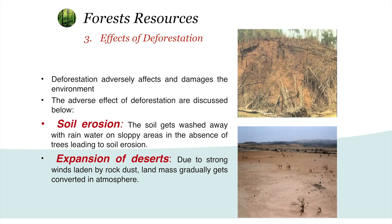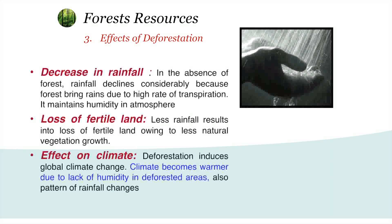Strong winds can carry dust, rock, or sand from the desert to fertile lands and cover them, expanding the deserts. Decrease in rainfall: forests evaporate a lot of moisture and increase rainfall, but if there are no forests, rainfall will decrease. Loss of fertile land: fertile land needs water or rainfall for the growth of vegetation, so without forest it will not be possible, and we also lose fertile land.